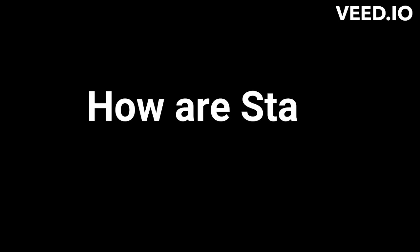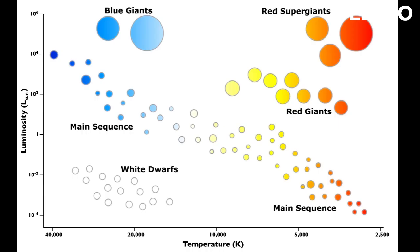How are stars classified? Astronomers classify stars based on their temperature, luminosity, and spectral type. Temperature is an important factor because it affects the color of a star, with cooler stars appearing red and hotter stars appearing blue. Luminosity refers to the amount of energy a star emits, and spectral type refers to the unique pattern of wavelengths in the light emitted by a star.